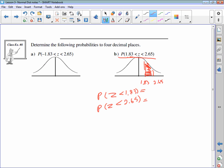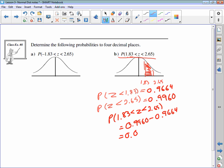This one was 0.9960 and 0.9664. So the probability then that we're between, you subtract the two of them and you end up with 0.9960 minus 0.9664, 0.0296, and that is your answer.